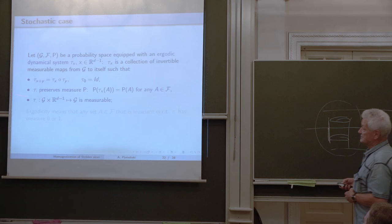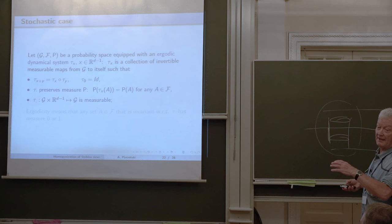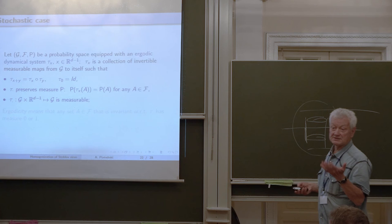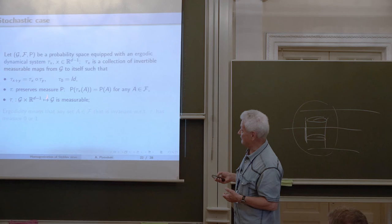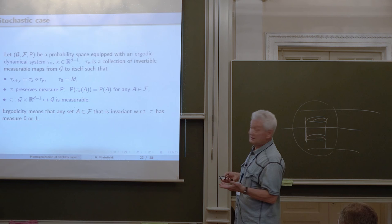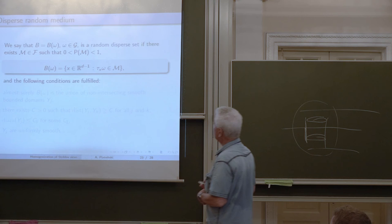We have a standard probability space equipped with an ergodic dynamical system tau_x, where x is from (d minus 1)-dimensional space since we perforate only the (d minus 1)-dimensional interface. By definition, a dynamical system is a group of invertible measurable transformations from the probability space to itself that preserve the measure, and is measurable as a map from the product space.